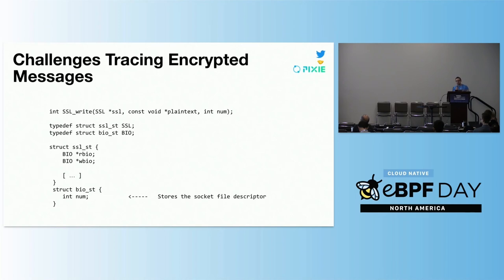Looking at the prototype of the SSL_write function: the second argument is the plain text data we can use just as in the plain text case. The first argument of interest is the SSL struct. What you'll see from the other struct definitions is that the SSL struct has an embedded RBIO member of type BIO — OpenSSL's basic input-output abstraction. Within that struct there is a num member, and that is where the socket file descriptor is actually stored. So our BPF program needs to walk this structure and pull out that num field.